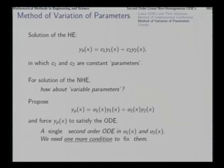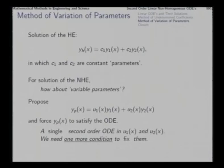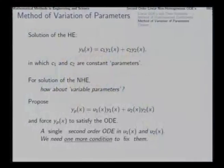We propose the particular solution of the non-homogeneous ODE as u1*y1 + u2*y2, then ask for the functions u1 and u2 that will make y_p satisfy the given differential equation. If we differentiate y_p twice and insert it into the equation, that gives us a single second-order ODE in u1 and u2.